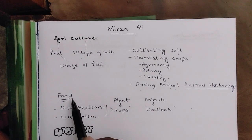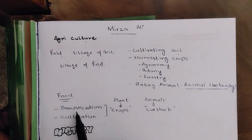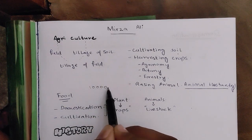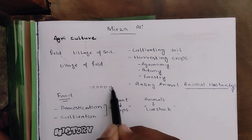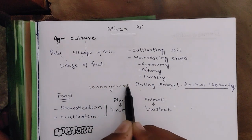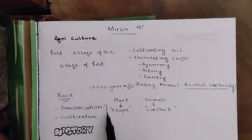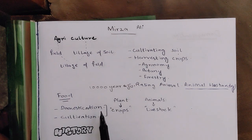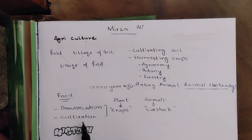The main purpose of agriculture is production of food. Food production started about 10,000 years ago with the domestication of plants and animals. Domestication means the adaptation of a wild animal to cultivate them in a village or urban area.